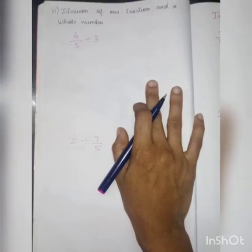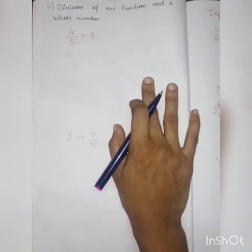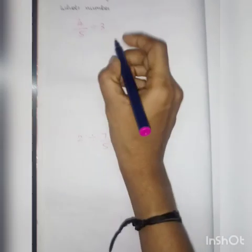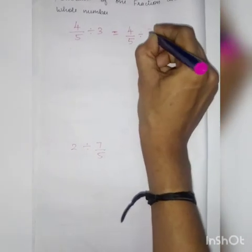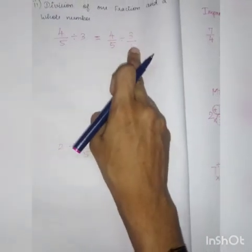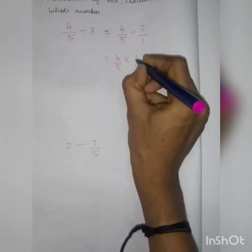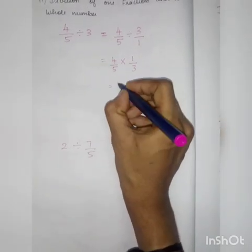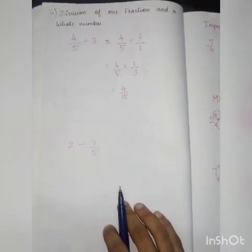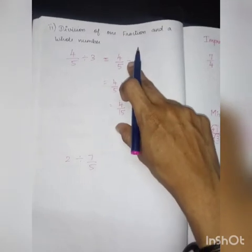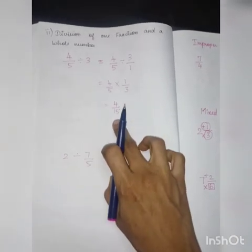Next is division of a fraction and a whole number. Like in multiplication, we write the whole number as a fraction with denominator 1. For example: 4 by 5 divided by 3 — write 3 as 3 by 1. Division becomes multiplication and the second fraction becomes reciprocal: 3 by 1 becomes 1 by 3. Multiply numerator into numerator: 4 times 1 is 4. Denominator into denominator: 5 times 3 is 15. So 4 by 15 is the answer.